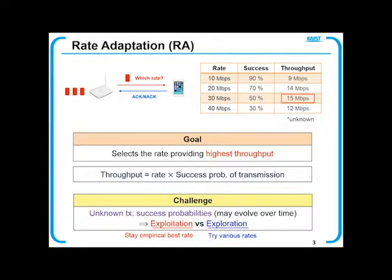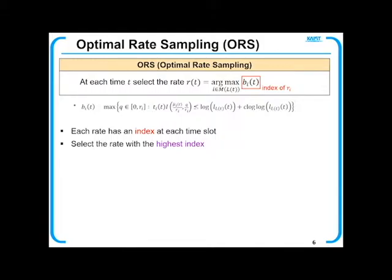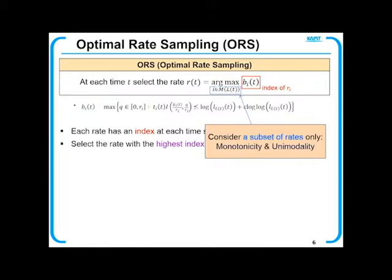The challenge of rate adaptation comes from that success probabilities are unknown. We should learn those probabilities. MAC protocols basically send ACK/NACK packets to the sender to inform the success or failure of transmission. Thus, we can estimate the success probabilities from ACK/NACK histories.